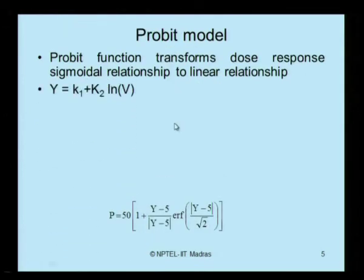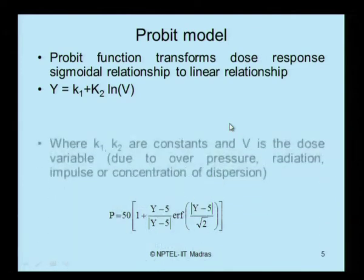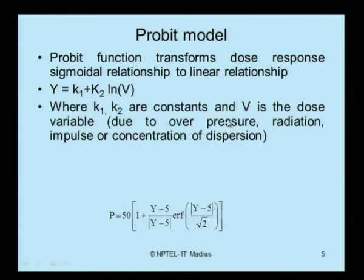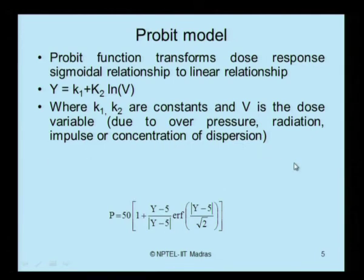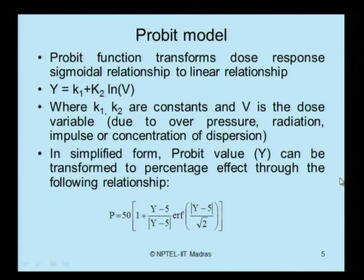The probit value y is given by: y = k1 + k2 × ln(V), where k1 and k2 are constants and V is the dose variable, which can depend on over pressure, radiation, impulse levels, or concentration of dispersion — depending on the kind of release. In a simplified form, probit value y can also be transformed to percentage effect through the following relationship.